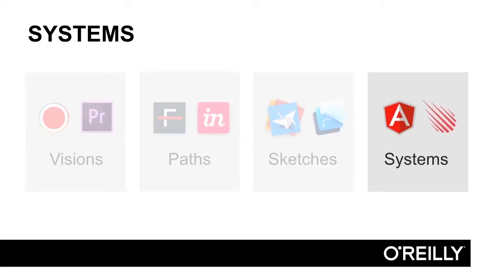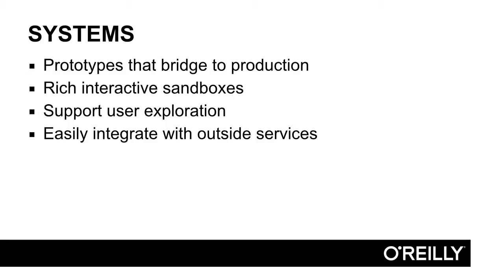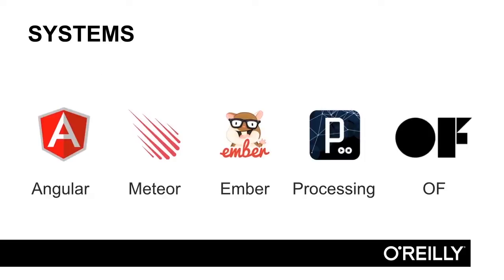Last, on the far extreme of our spectrum, are systems. Systems blur the lines between prototype and production — they are quickly created, fully functional applications. At their best, systems create rich interactive sandboxes that allow users to explore unconstrained. They are infinitely customizable, easy to integrate with outside services, and provide clients with robust technical proofs of concept. In the systems bucket, I include JavaScript frameworks like Angular, Ember, and Meteor, which abstract away messy details like security settings and back-end logic, leaving designers to focus on the good parts. Creative coding suites like Processing and Open Frameworks also fit here.